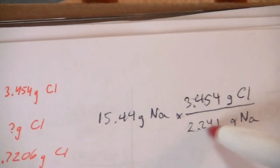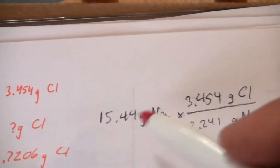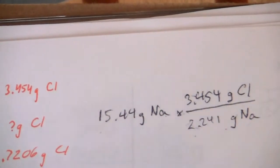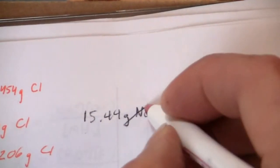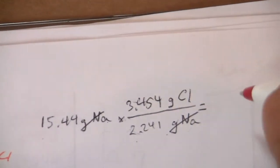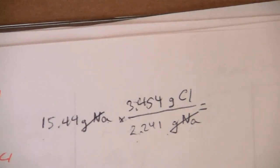This is the proportion of sodium to chlorine that is in the compound regardless of whether we have this much sodium or this much sodium. So this will cancel my grams of sodium and I will end up with grams of chlorine.